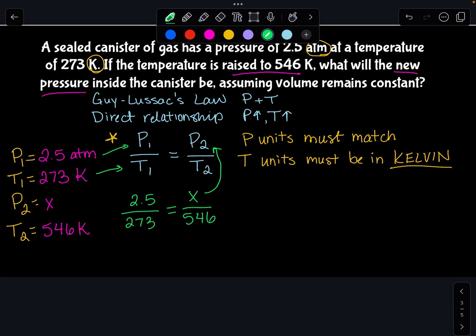Now, to solve for X, the first thing I need to do is cross multiply. Get everything up to the top. So if I do 546 times 2.5, that gets me 1365. And then if I do 273 times X, that's going to get me 273X.